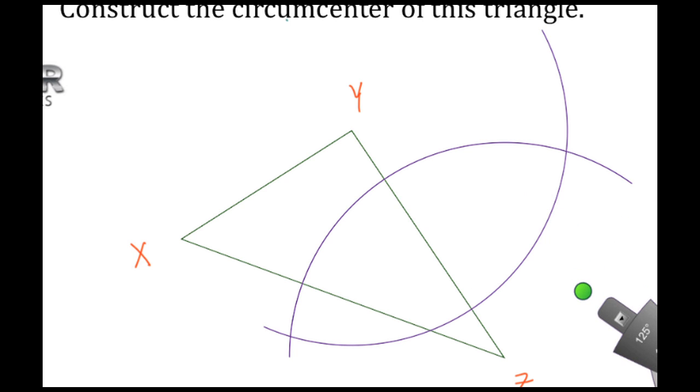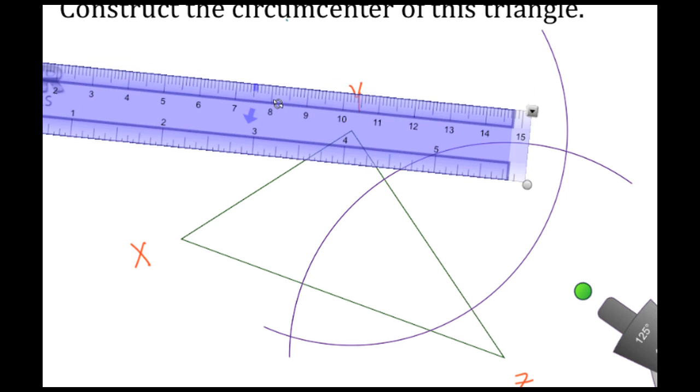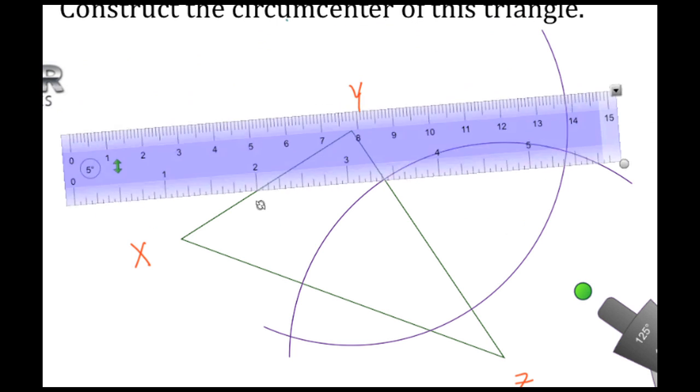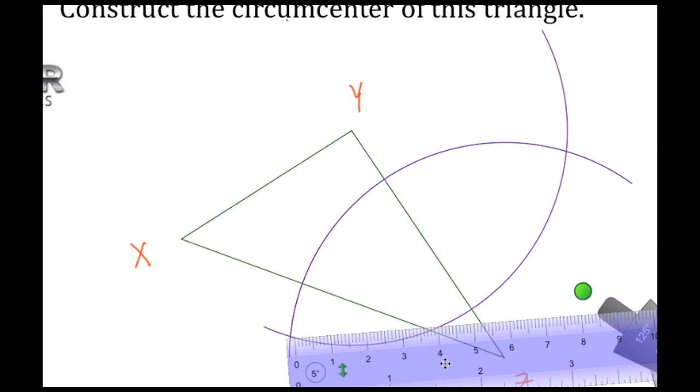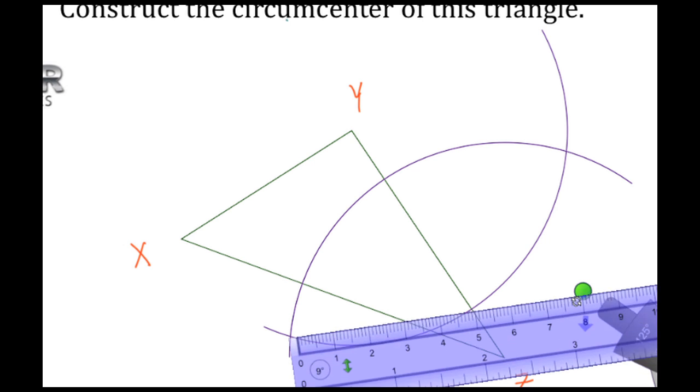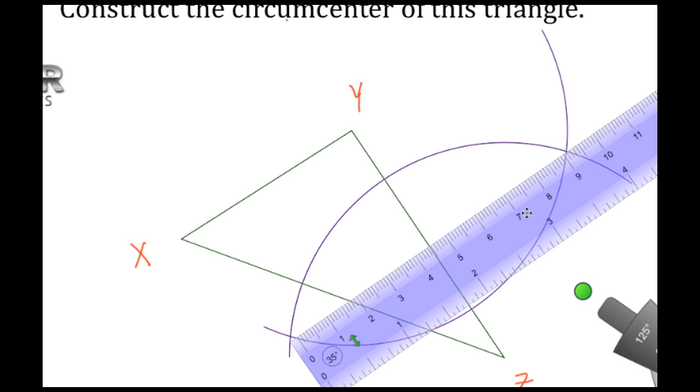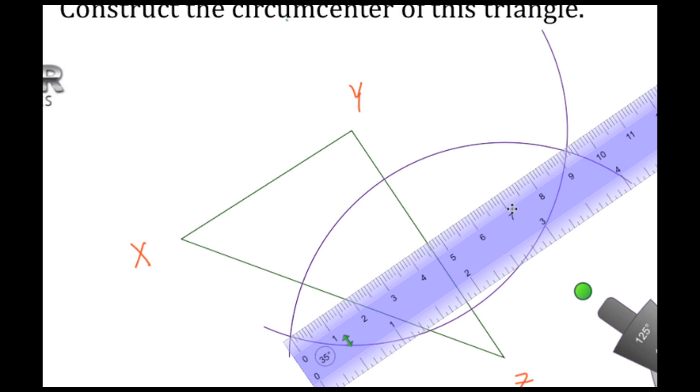Once I have the intersection, I'm going to take out my straight edge tool and with the straight edge tool I'm going to connect those two intersecting points here on these two arcs. When I do that, I am actually creating a perpendicular bisector.